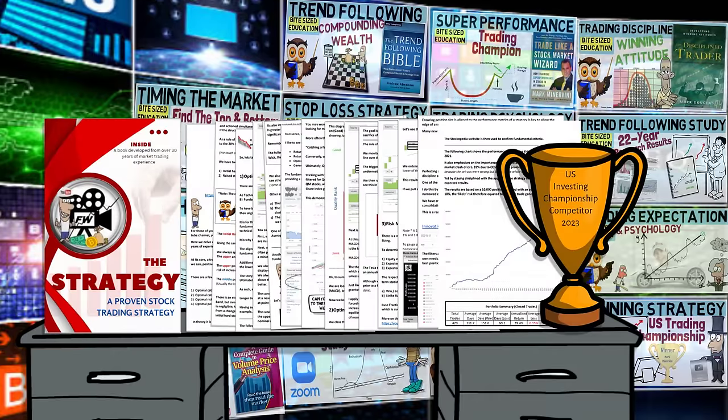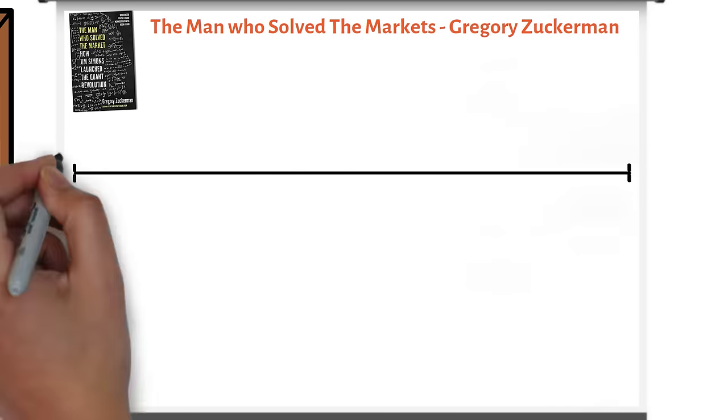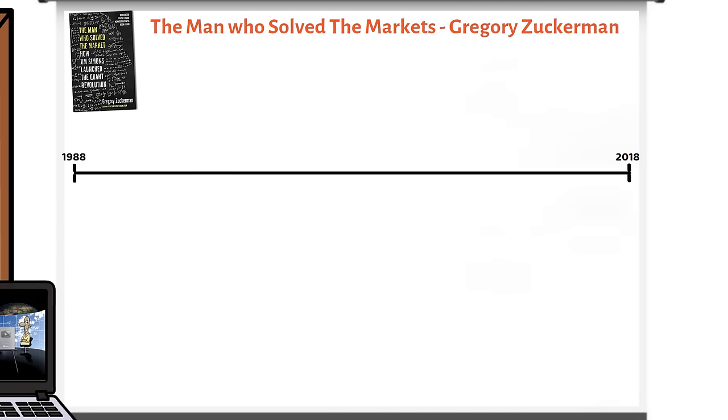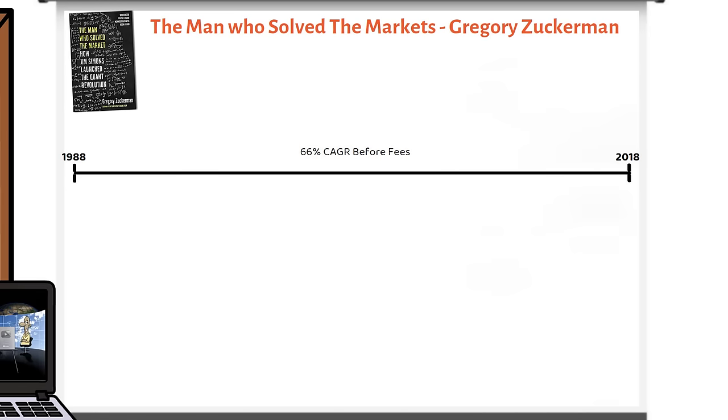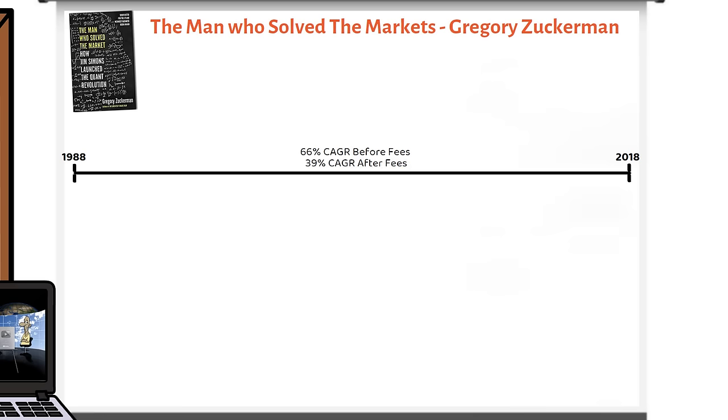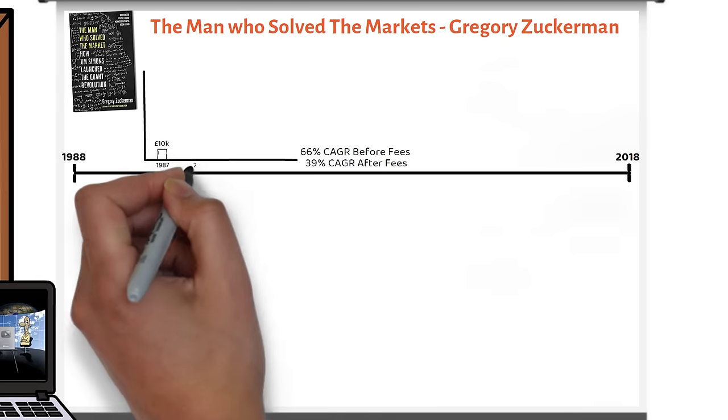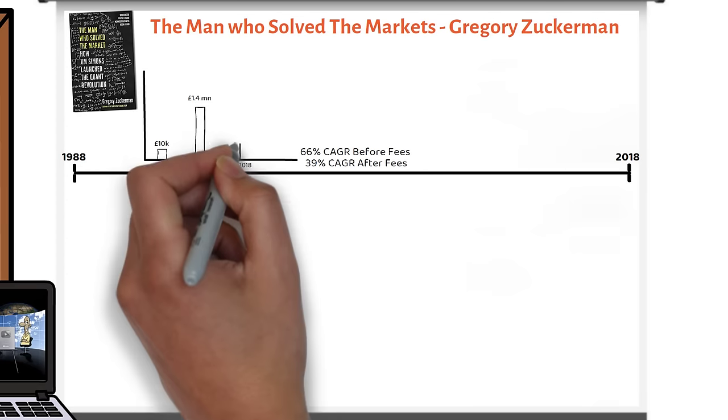Okay, let's get into the story. From 1988 to 2018, Jim Simons with his team delivered average annual returns of 66% before fees and 39% after fees trading financial markets. To put this into perspective, a $10,000 investment would have grown to $1.4 million net of fees in 15 years and to $271 million in 31 years.